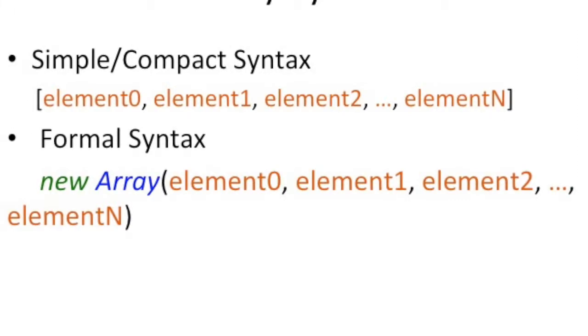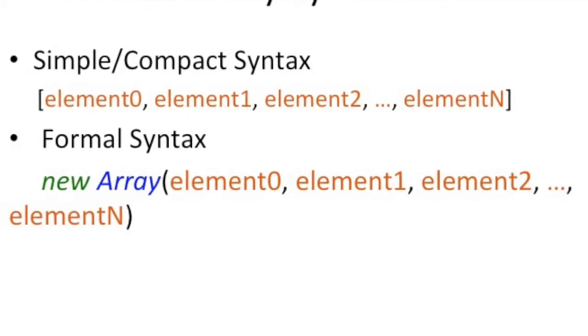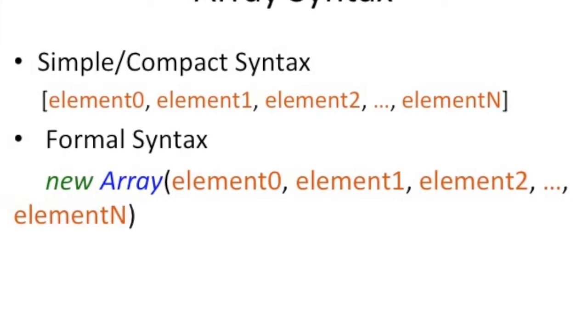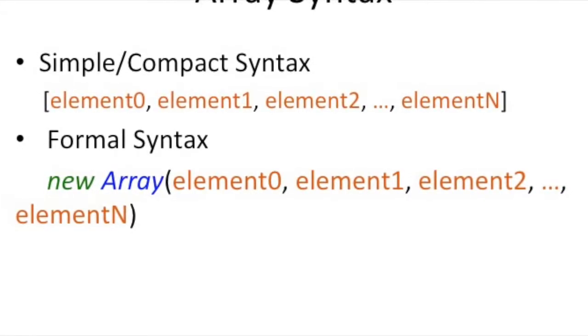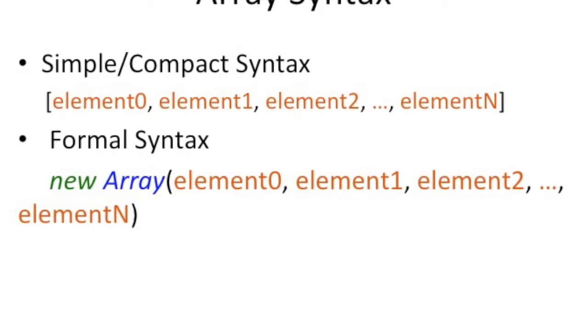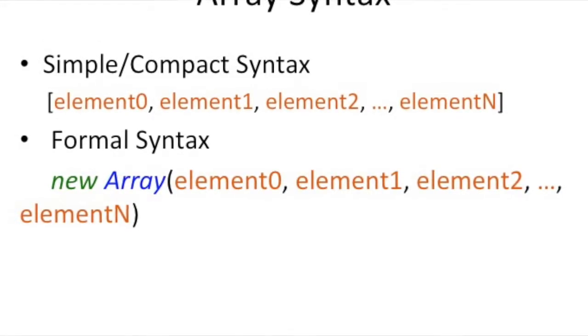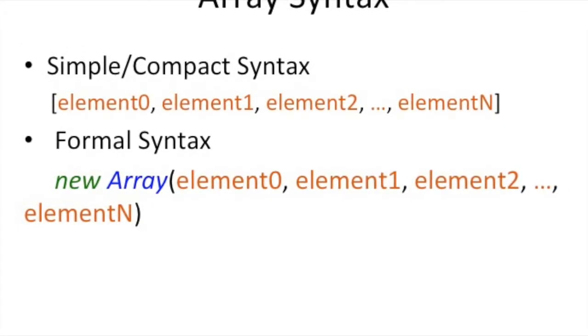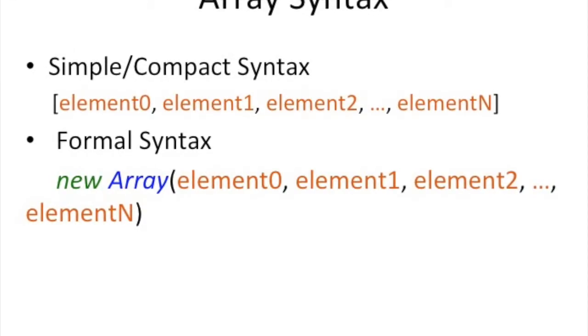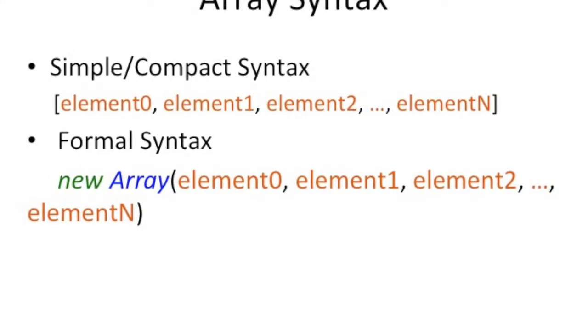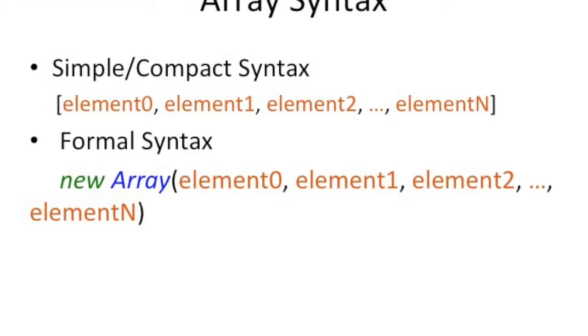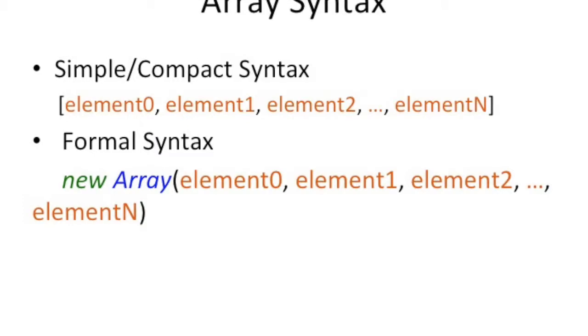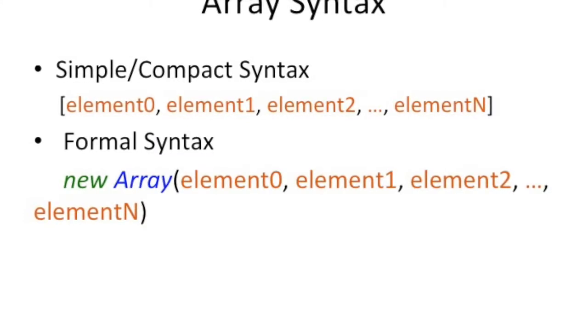You just comma separate them and as many as you like. And then there's a more formal definition that looks like new array and then the same thing. As you can see, the first one is shorter and compact. So really no reason to use the second one unless you really like typing or something like that. The second one is basically just making it explicit that you're creating an object, just like when we saw the example for a date.